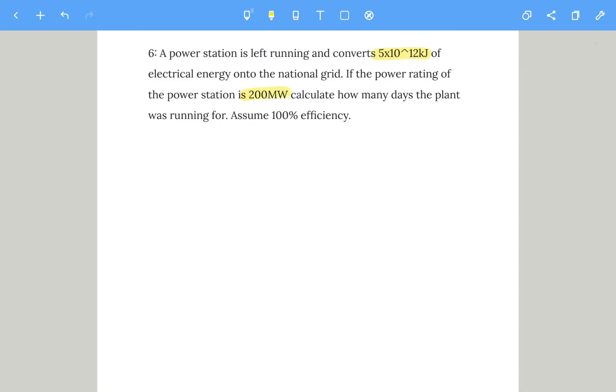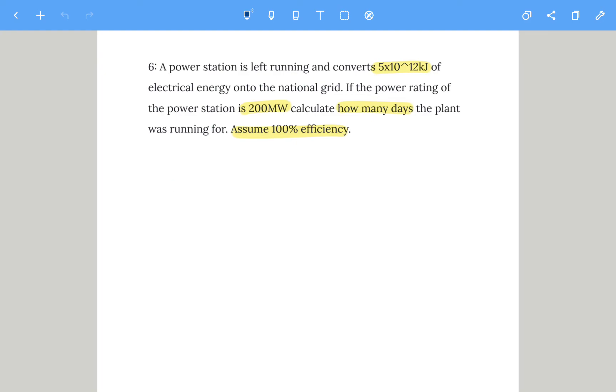We've got energy, power, and we need time. Those equations don't work, but if you've been watching the material, you'll know that energy is power times time. We need time, so energy divided by power equals time. It's 5×10^12 kilojoules, so multiply by 1,000 to get 5×10^15 joules, divided by 200 megawatts. 200 mega means million, so 200×10^6 watts. That gives us 25 million seconds or 25×10^6 seconds.